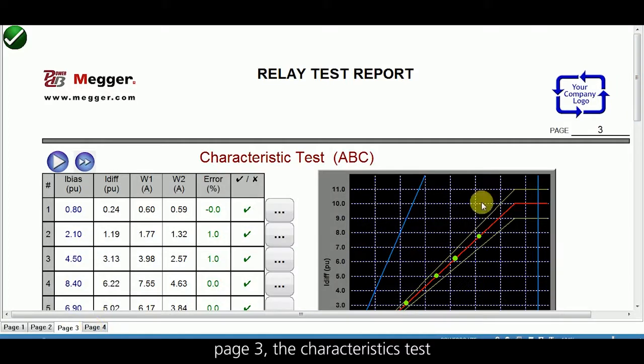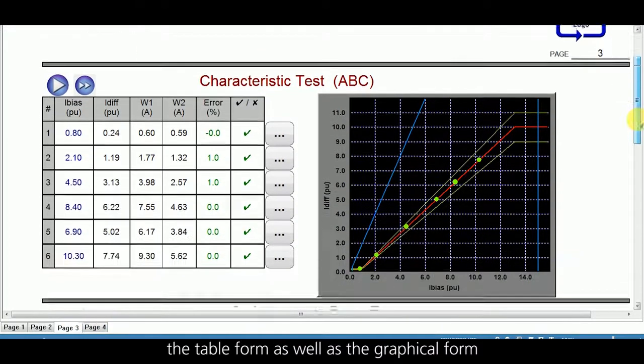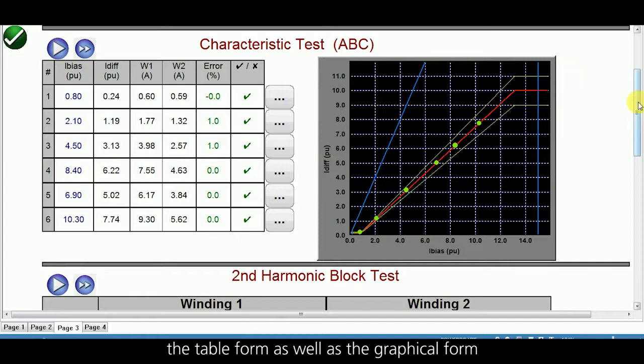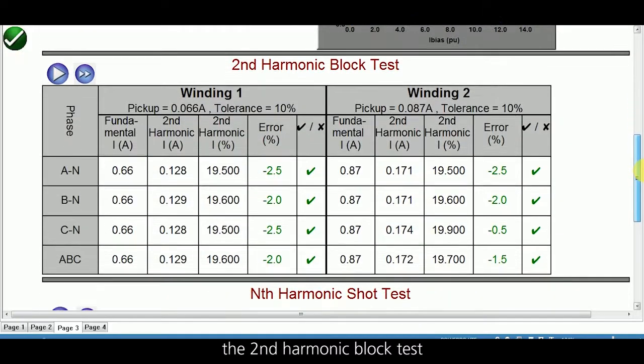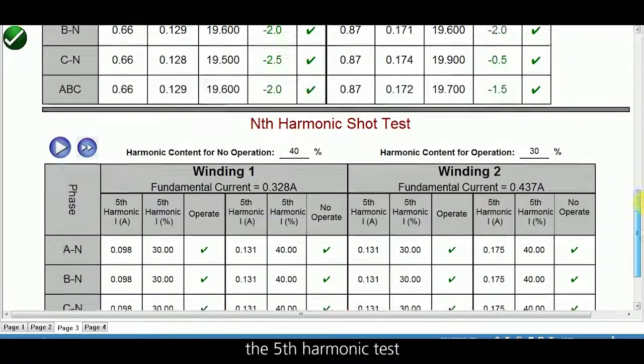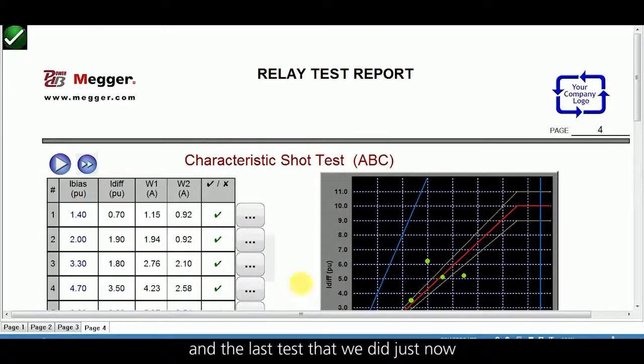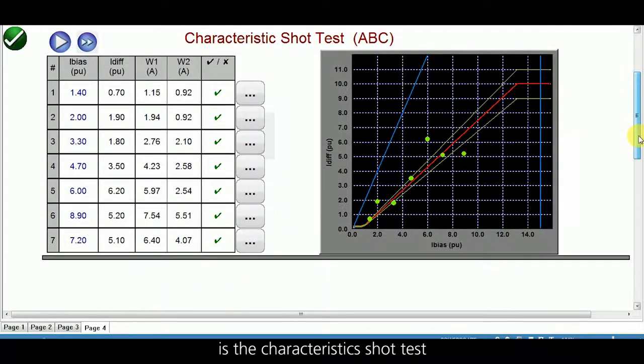Page 3, the characteristics test, the table form as well as the graphical form, the second harmonic block test, the fifth harmonic test, and the last test that we did just now is the characteristics shot test.